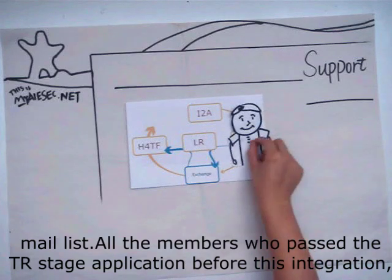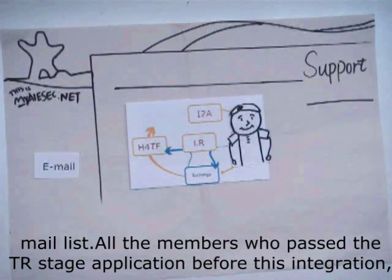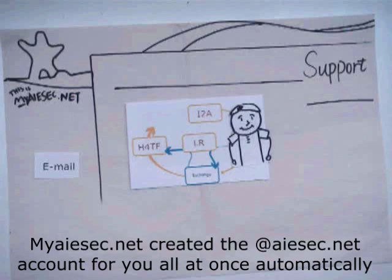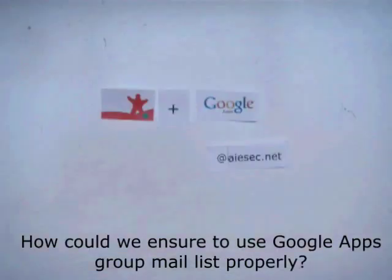All of the ISEC members who passed to the Taking Responsibility stage before the integration had their ISEC.net accounts created all at once automatically. So now that we know how to access the group mail list, how do we ensure that we can use the Google Apps email properly?